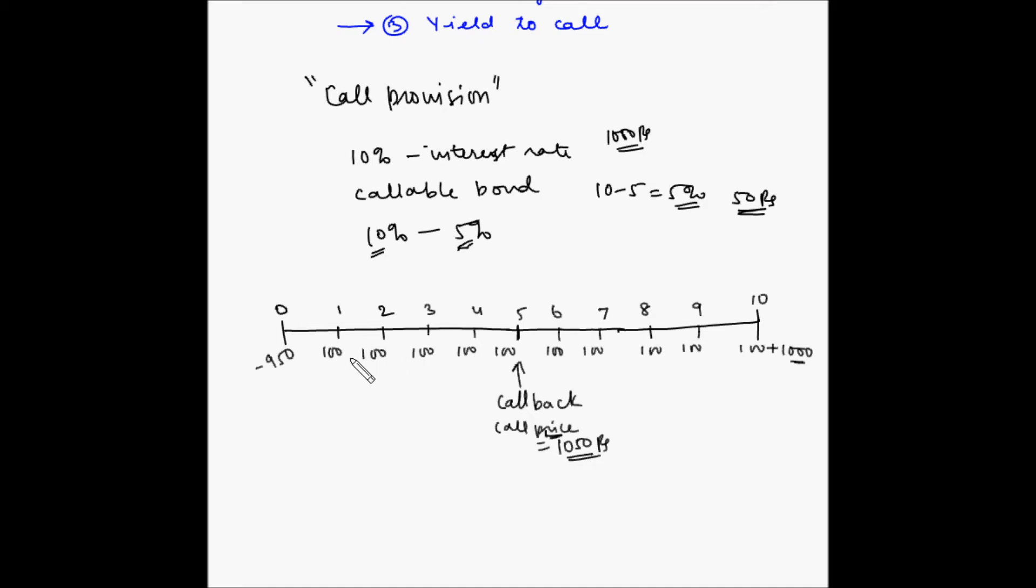Basically what we have to do is, in order to find the yield to call, we have to find out the rate at which the present value of the bond will be equal to the sum of the interest and the call value. So basically this value which is the present value already should be equal to the present value of all these interest cash flows.